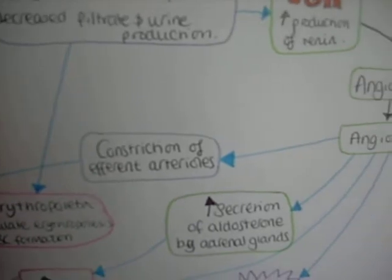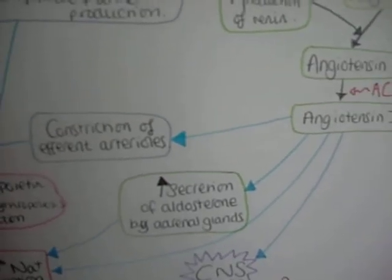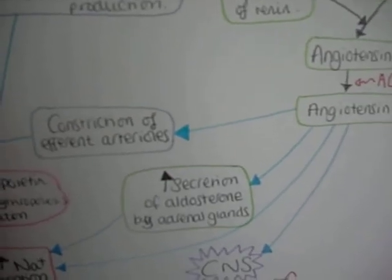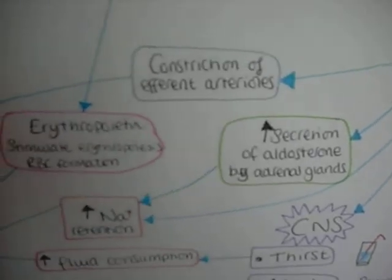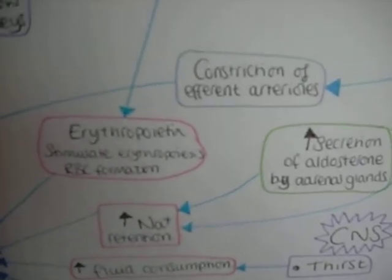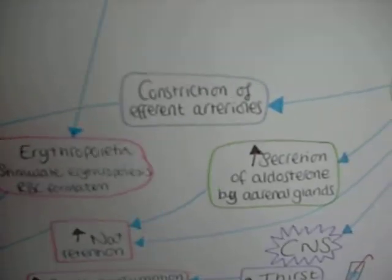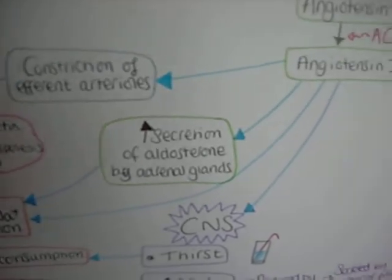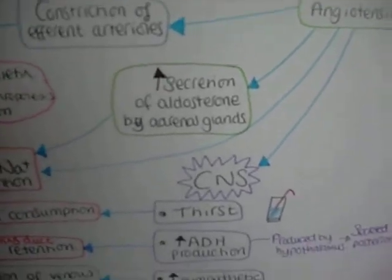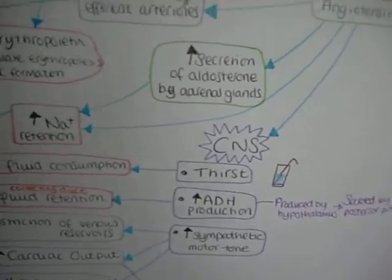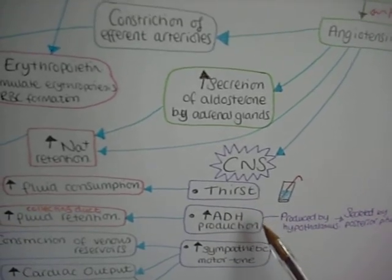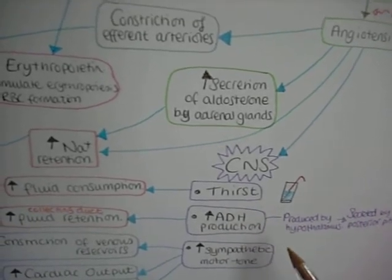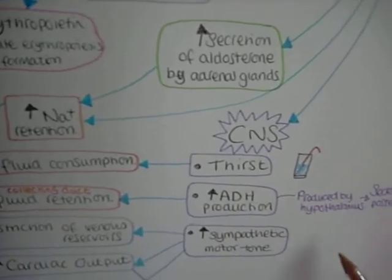Angiotensin 2 constricts efferent arterioles directly. It also stimulates secretion of aldosterone by the adrenal glands, which directly increases sodium retention. It also stimulates the central nervous system to cause thirst, ADH production, and sympathetic motor tone.